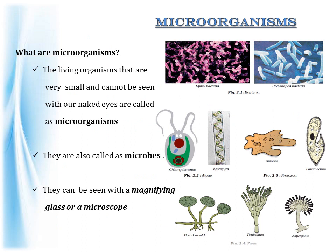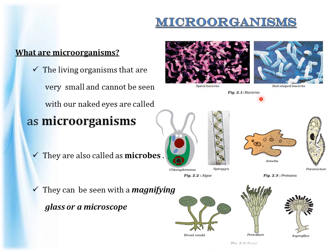What are microorganisms? The living organisms that are around us which are very small and cannot be seen with our naked eyes are called microorganisms. They are also called microbes. They can be seen with a magnifying glass or a microscope.